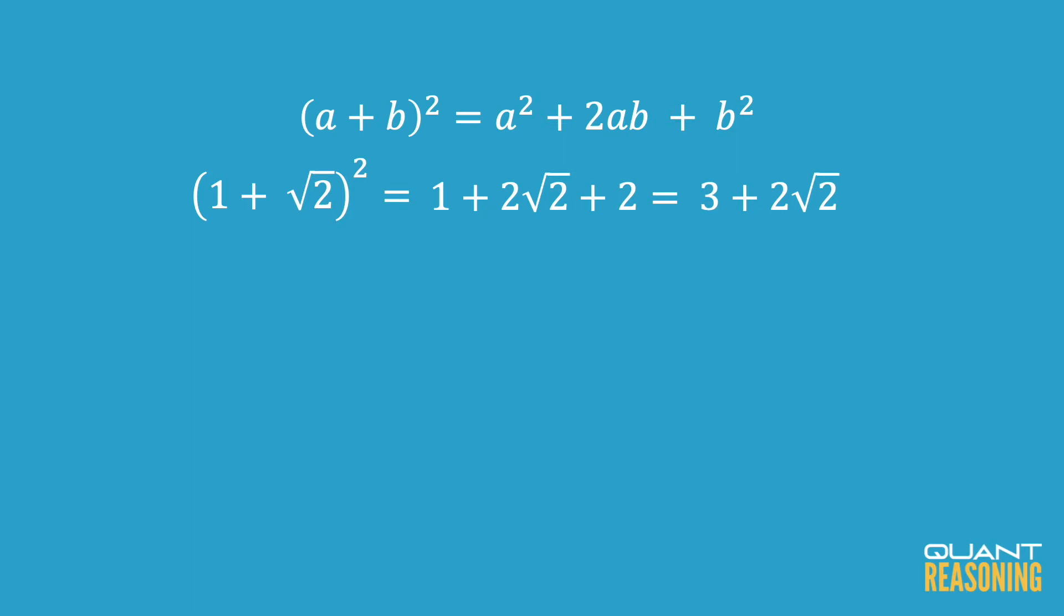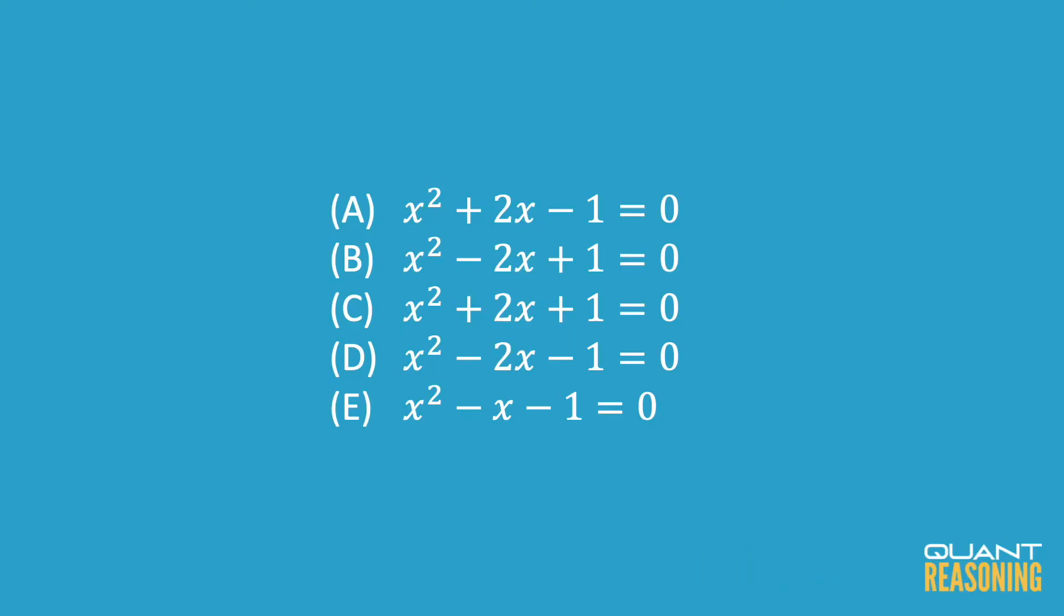So in the correct answer choice, we're going to have to have something that would subtract out a 3 and also subtract out 2 root 2. Now I think focusing on subtracting the 3 is probably easier.